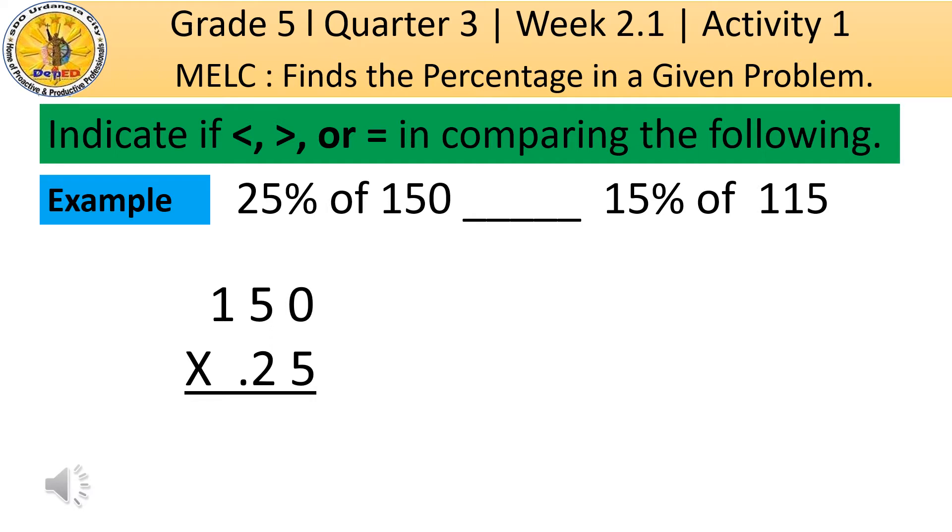The first digit of multiplier, which is 5, will be the first to be multiplied. So, 5 times 0 is equal to 0. Then, 5 times 5 is equal to 25. We group 2 to the last upper digit of multiplicand. Then, 5 times 1 is 5, plus 2 is equal to 7.